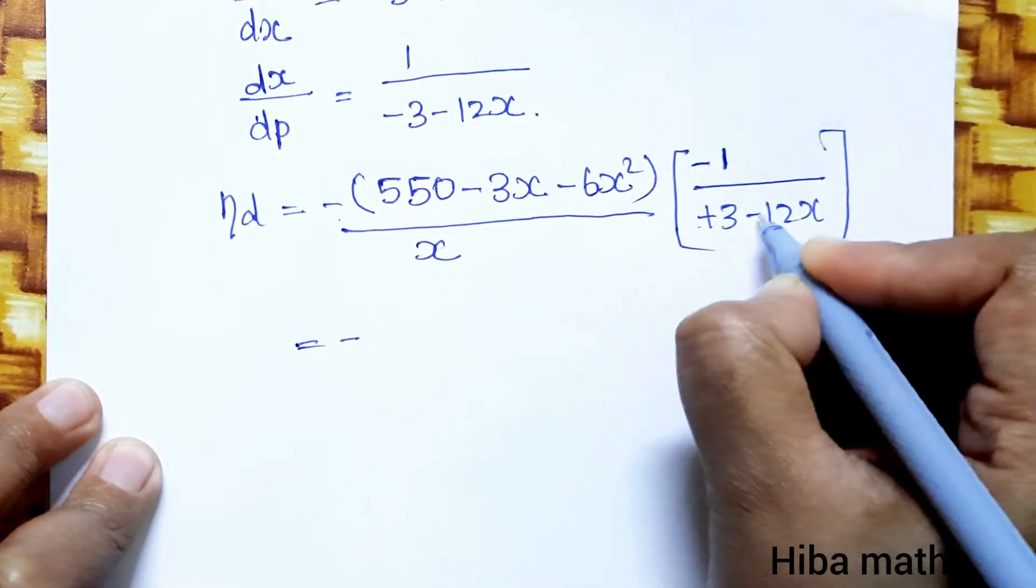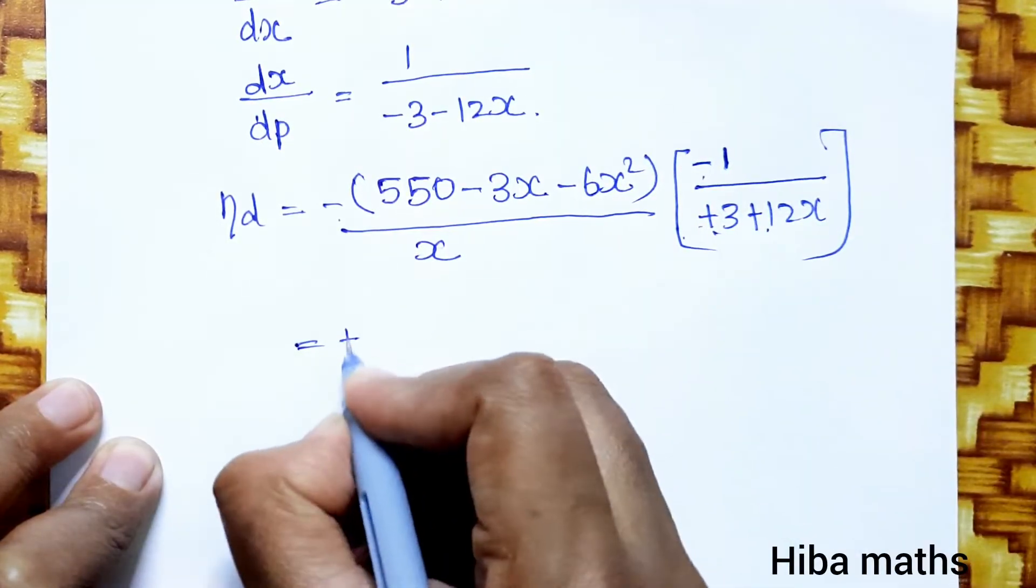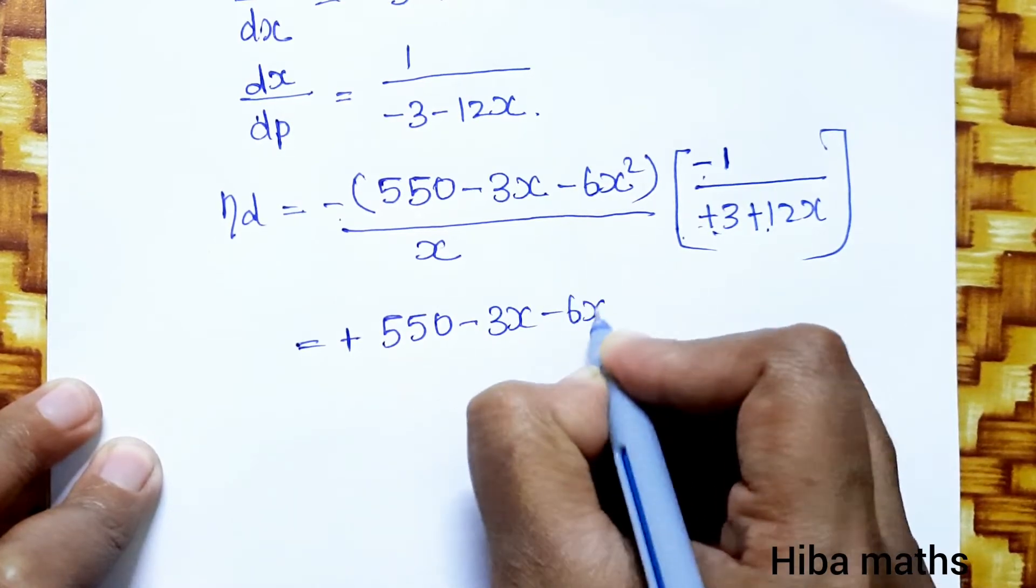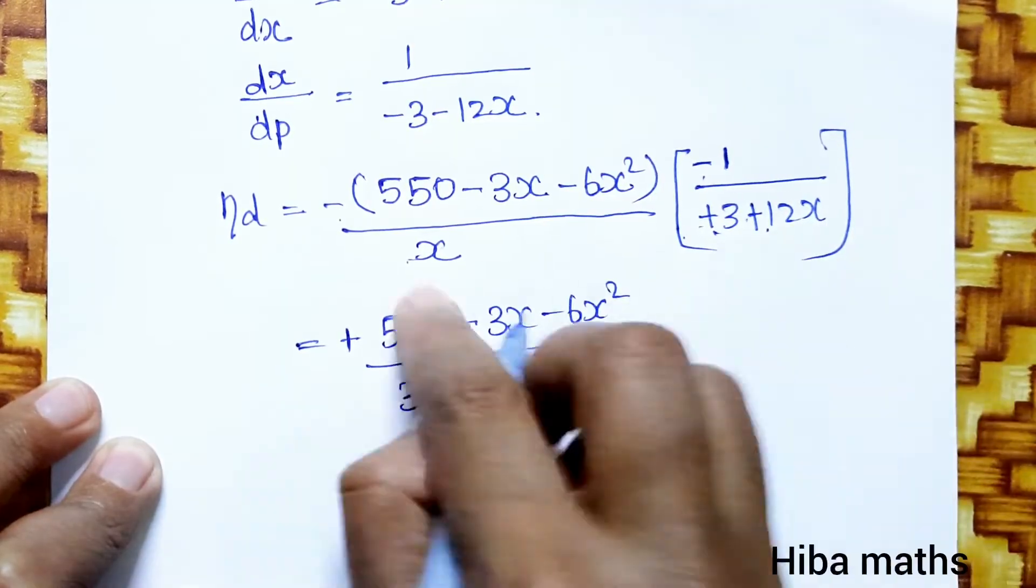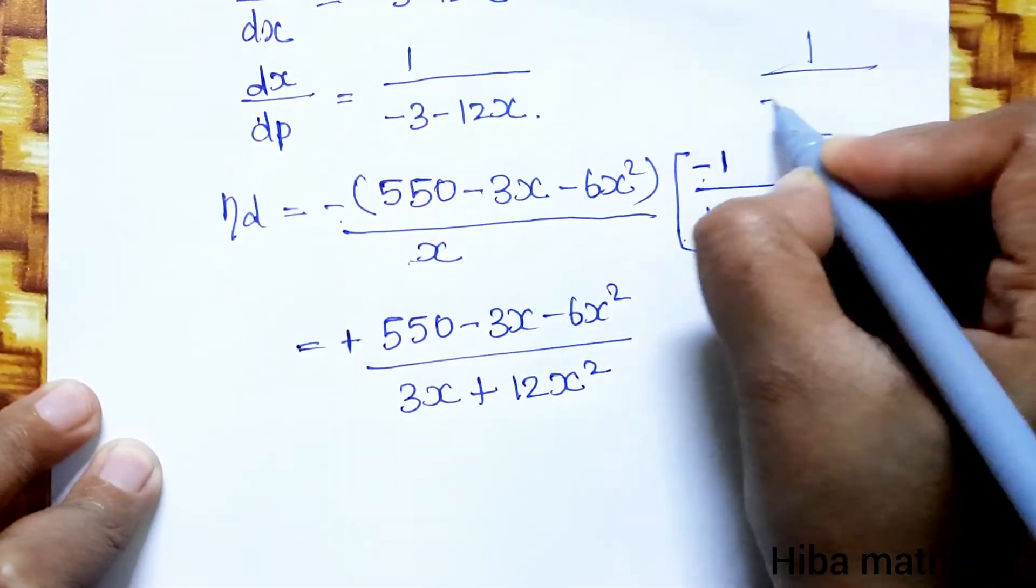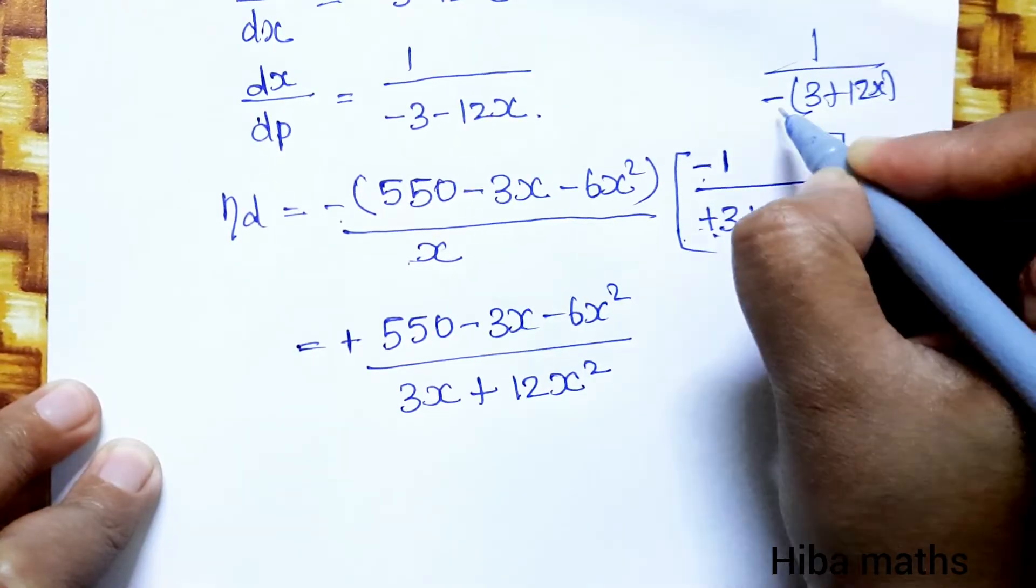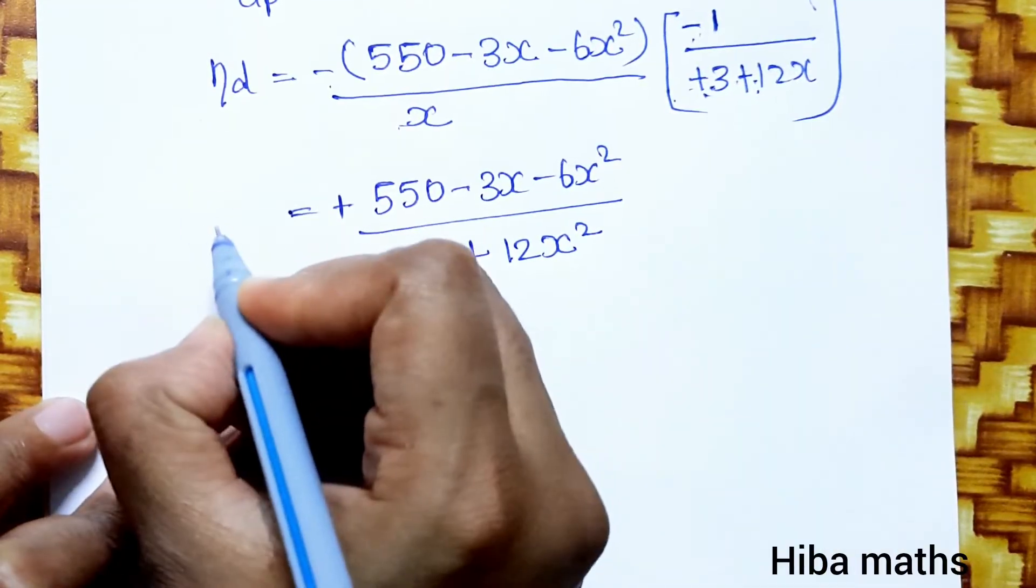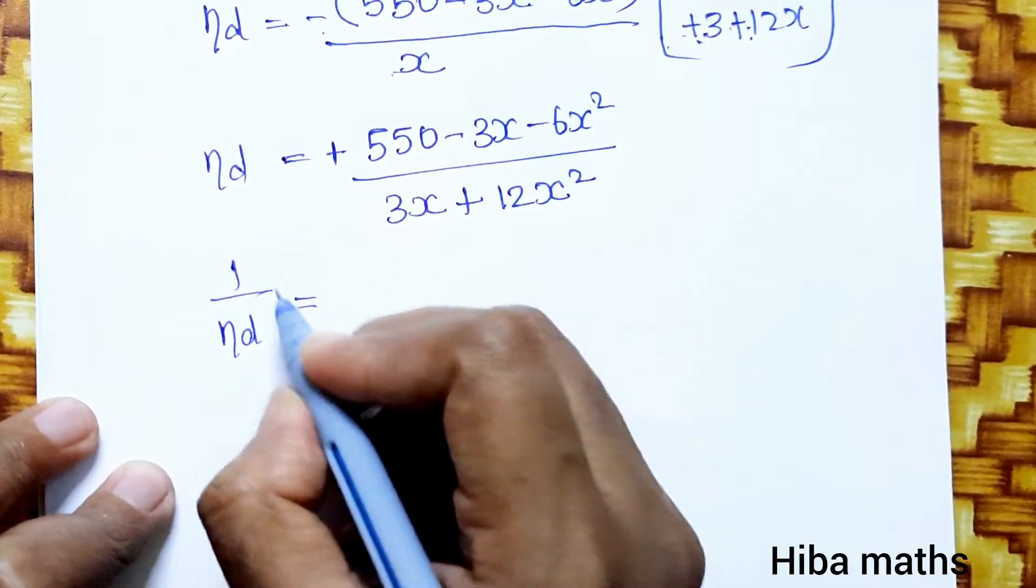Taking minus common, minus minus becomes plus. So eta d equals 550 minus 3x minus 6x square divided by 3x plus 12x square. Therefore, 1 by eta d equals 3x plus 12x square divided by 550 minus 3x minus 6x square.